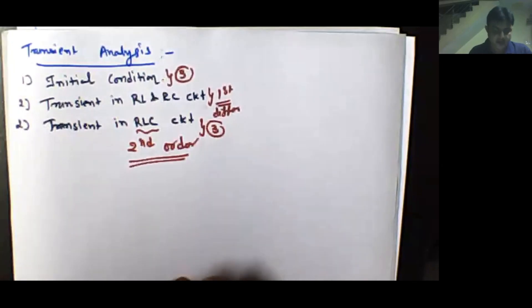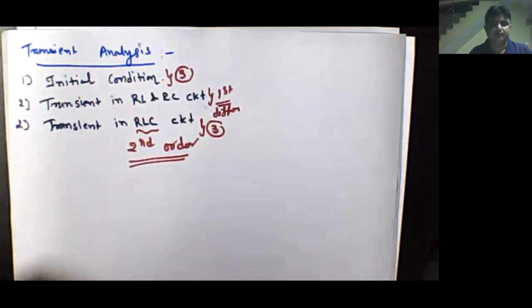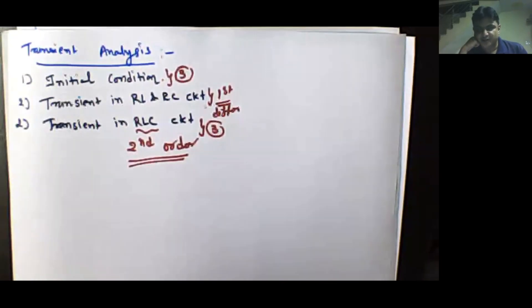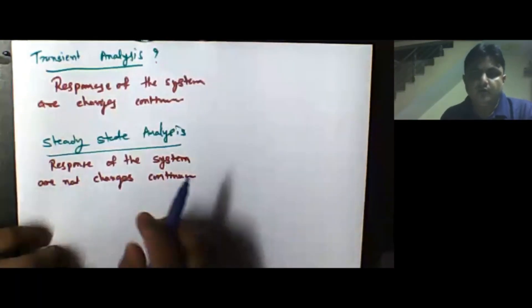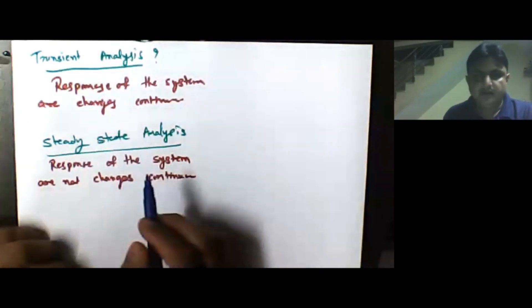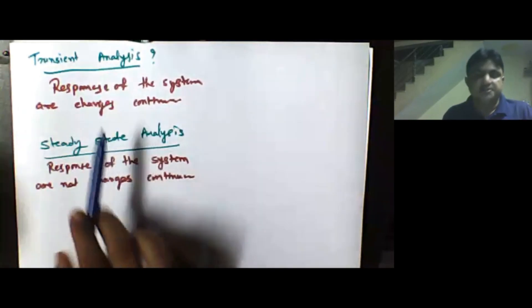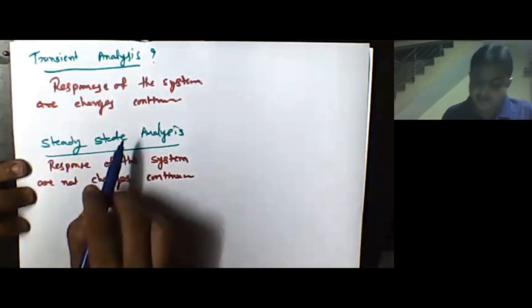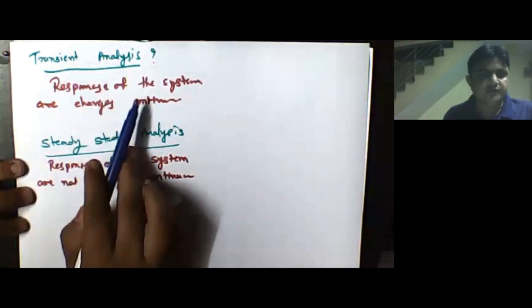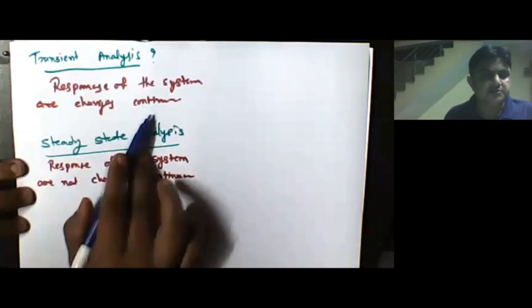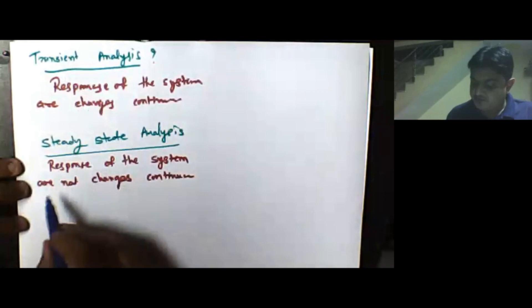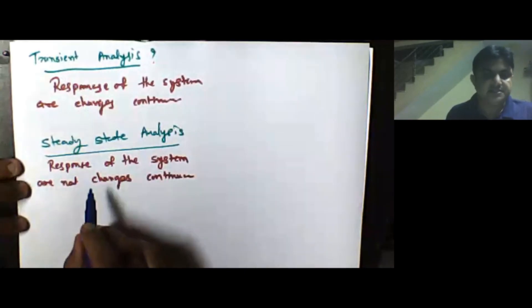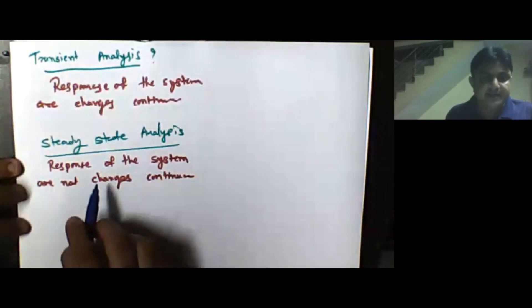With this background, let us start our first topic that is known as initial conditions. I hope you will enjoy this lecture series and find it helpful for your exam. Welcome you all. Let us discuss at the very initial stage: what do you mean by transient analysis and what do you mean by steady state analysis? When I am saying that the response of any system changes continuously, then that response or that state of that particular circuit is known as transient analysis. When the response of your system does not change continuously, or you can say it attains some steady state value, then that state is known as steady state analysis.